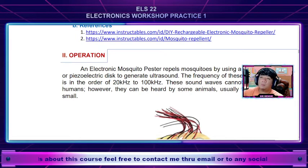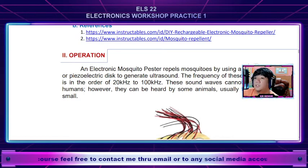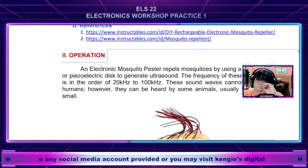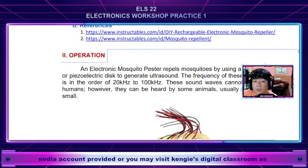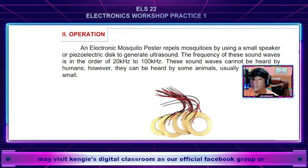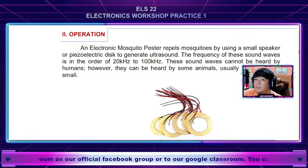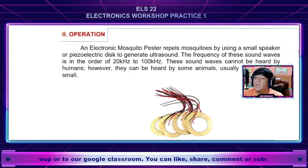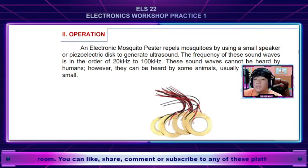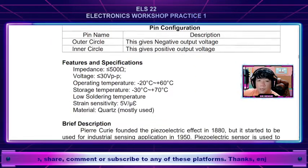For example, the individual project is an electronic mosquito pester, and the main component of this project is the 35mm piezoelectric disc — it's a transducer or condenser. To get to know more about the specific details and application of this piezoelectric disc, you need to find the technical data sheet. In the technical data sheet, you can find all the information: the voltage capacity, wattage, where it is used, and its functions.